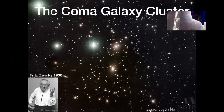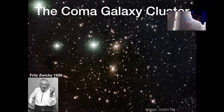This is how dark matter was discovered — a series of observations many of which use this exact same principle. This is not the first observation, but it's a famous one, done by astronomer Fritz Zwicky in 1936. He looked at a cluster of galaxies — a bunch of galaxies all orbiting around each other, orbiting around a common center of mass. These galaxies are kind of in a swarm.